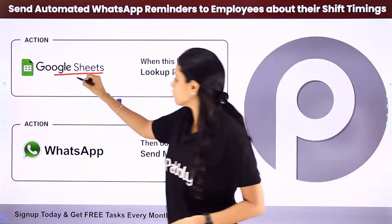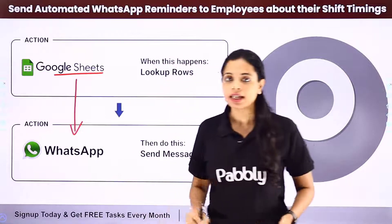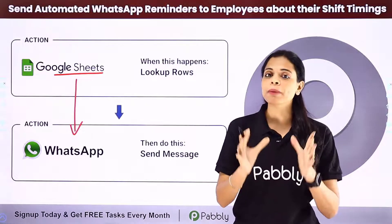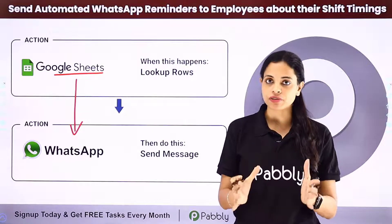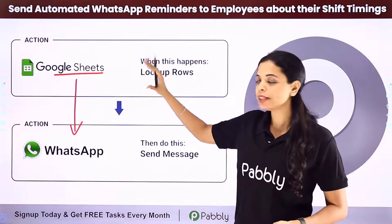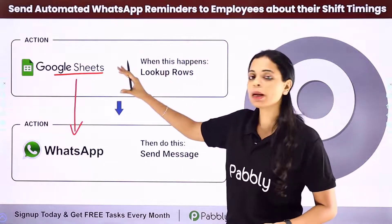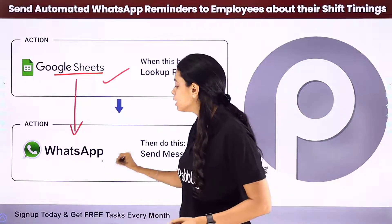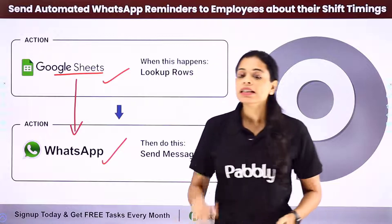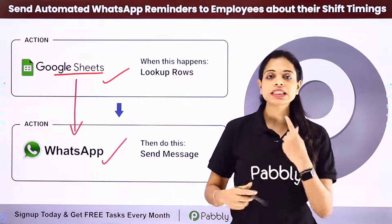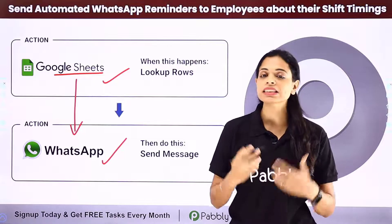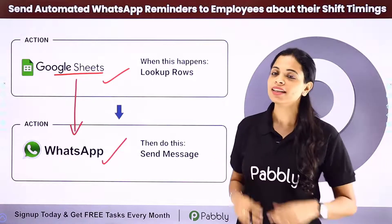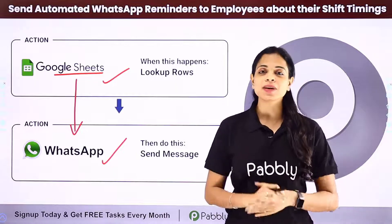To do this, you will need to integrate these two applications, and the same can be done using Pabbly Connect software. Once you have scheduled it, your action applications would be Google Sheets and WhatsApp. Now let me take you to my screen to understand how you can integrate and automate this entire process yourself.